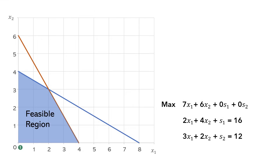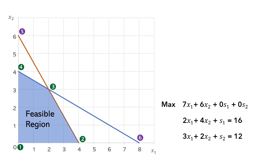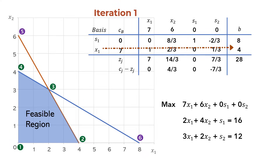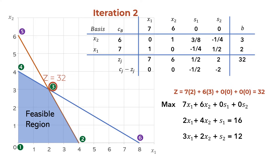Now let's see how this relates to the graphical solution of the LP problem. The basic solutions are the extreme points labeled 1 to 6. The basic feasible solutions are the corner points of the feasible region labeled 1 to 4 in green. The solution in the initial simplex tableau occurs at corner point 1, where x1 and x2 are 0, s1 is 16, s2 is 12, and the objective function value is 0. After the first iteration, we obtain x1 equals 4 and s1 equals 8 — corresponding to point 2, with an objective function value of 28. The final iteration corresponds to the optimal solution at corner 3, where x1 is 2 and x2 is 3, and the optimal objective function value is 32.